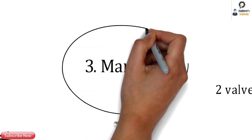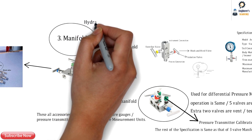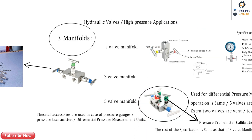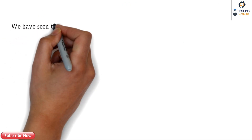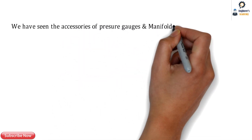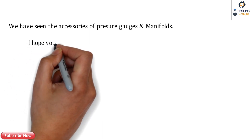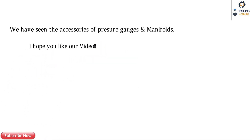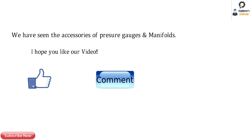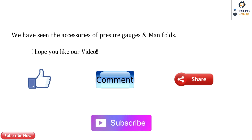Those were the three manifold types. These are hydraulic valves also used in high pressure applications. We have now covered the accessories of pressure gauges, valves, and manifolds. If you like the video, please hit like. For any doubts or queries, please comment below, share the videos on social networks, and subscribe to the Engineers Academy educational channel. Thank you for watching.